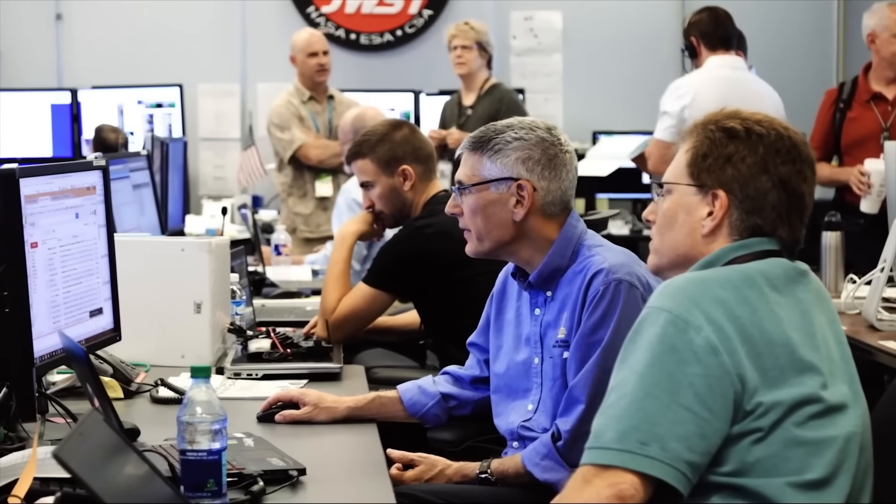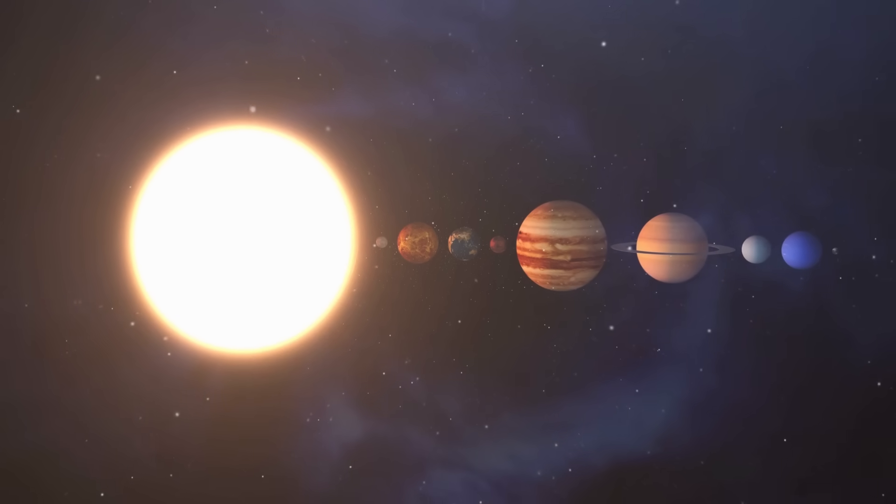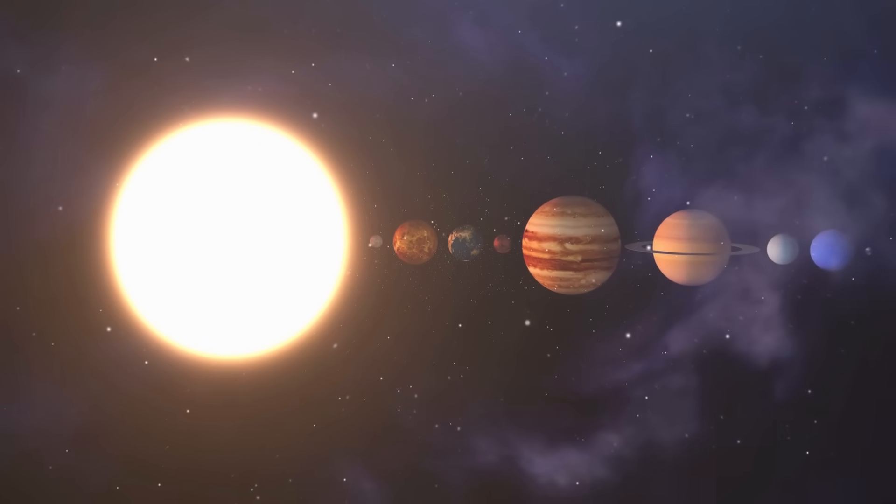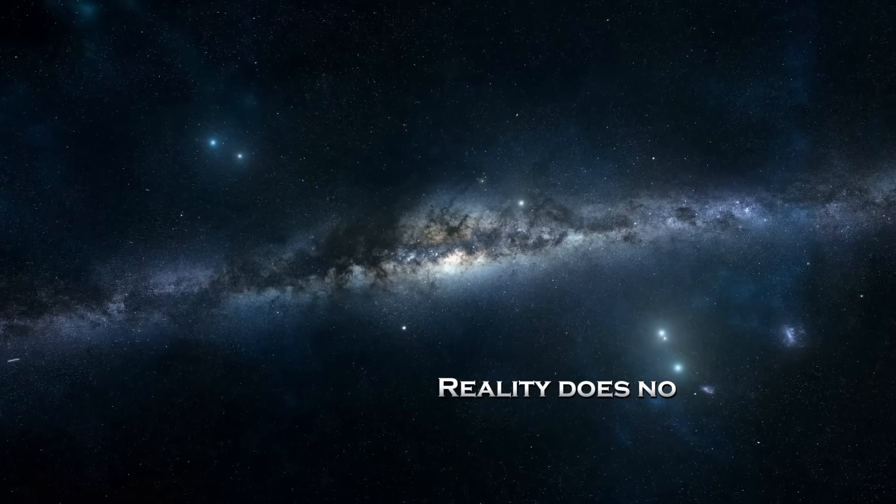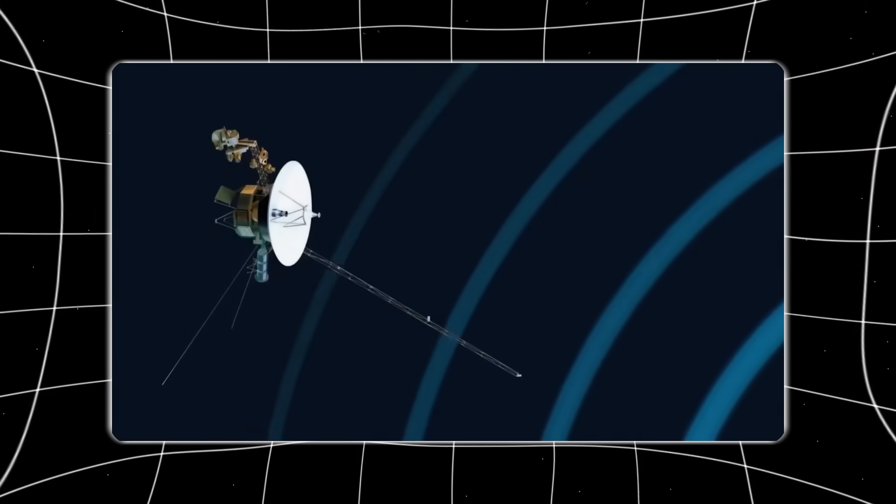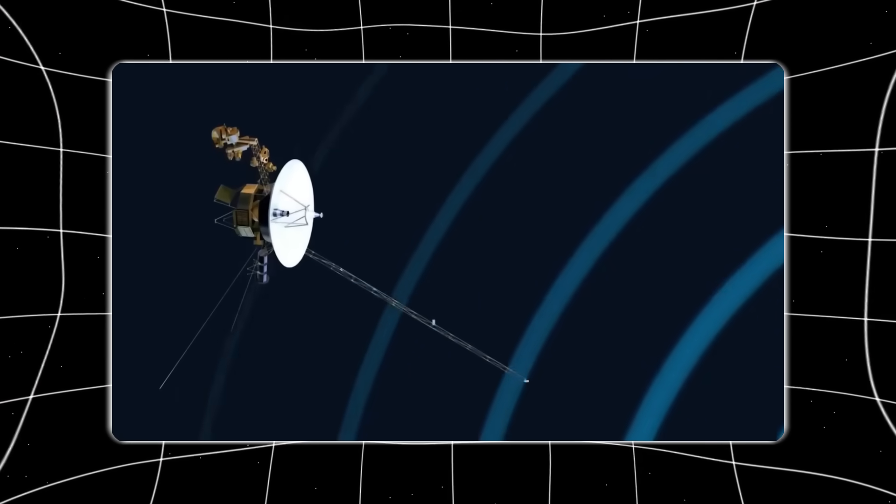One of the quiet assumptions that Voyager 1 destroyed is the idea that space is divided into neat regions. Solar system here. Interstellar space there. A border you cross and leave one environment behind. Reality does not work that way. Voyager 1's data suggests that the transition zone is messy, layered, and unstable.